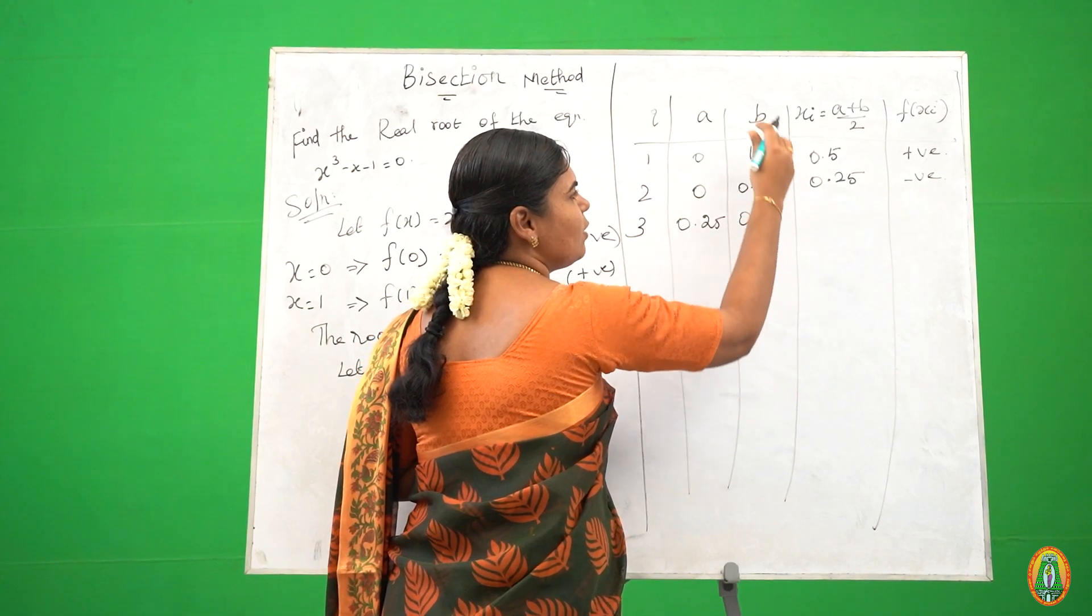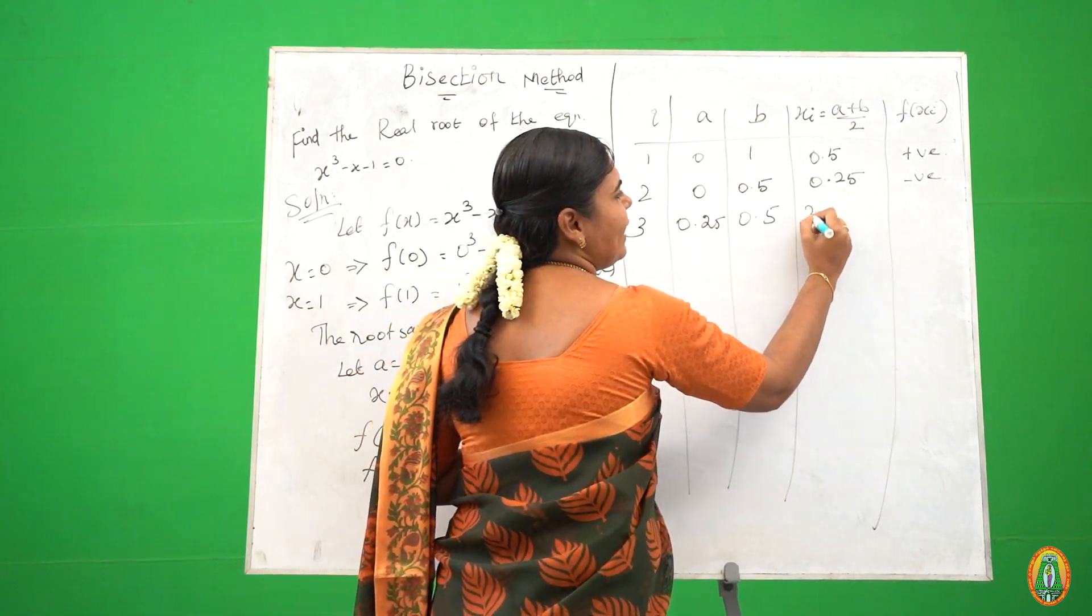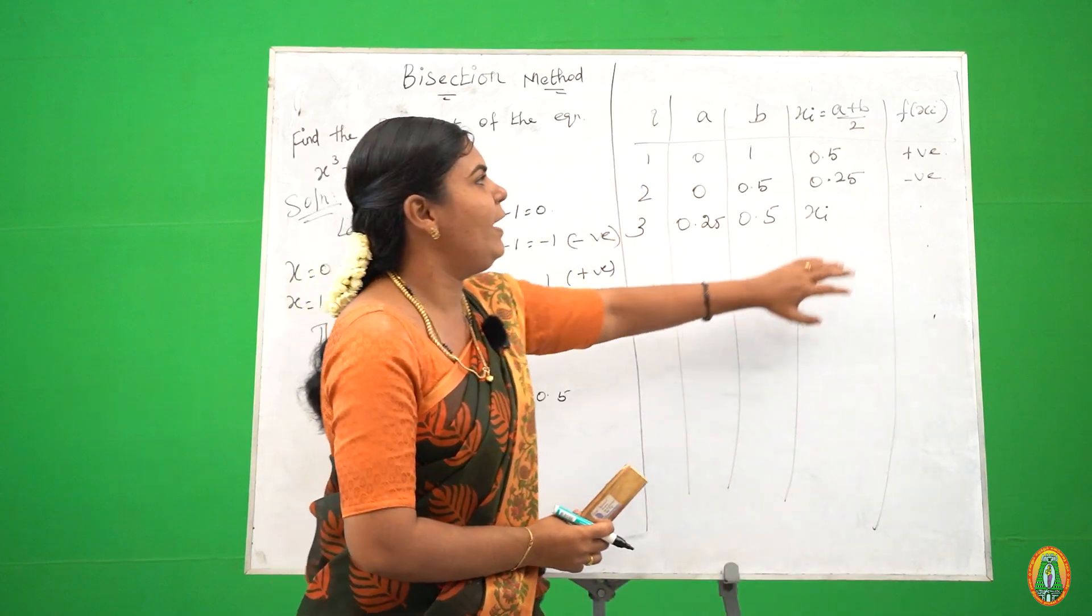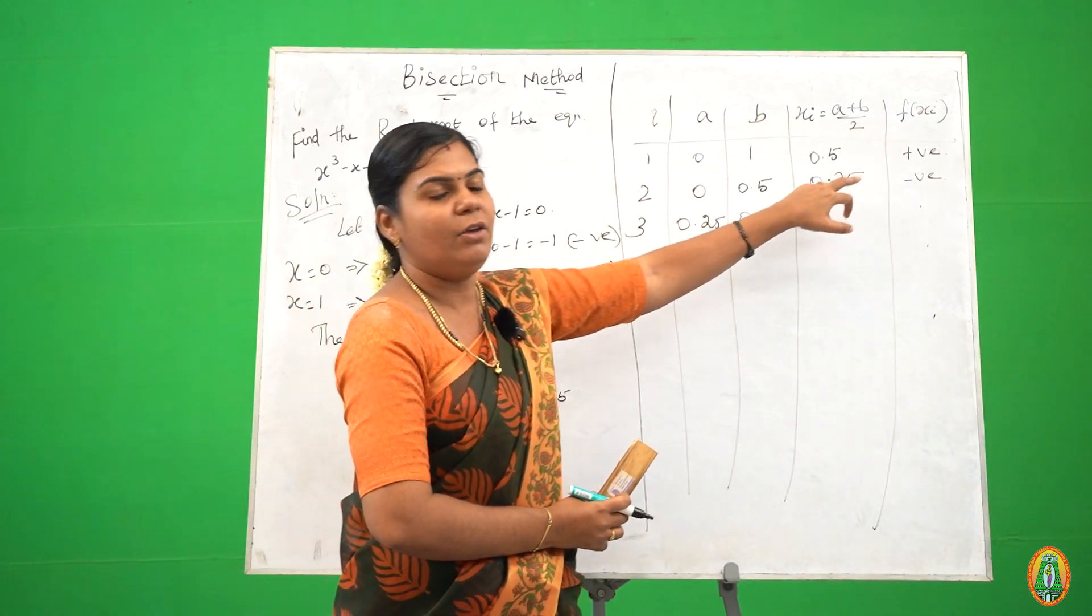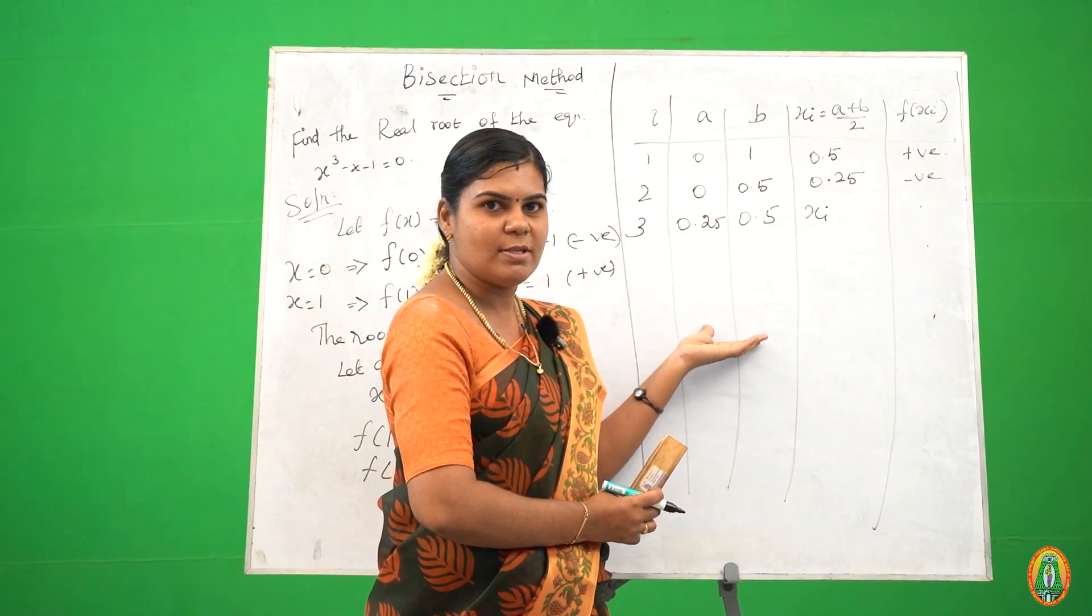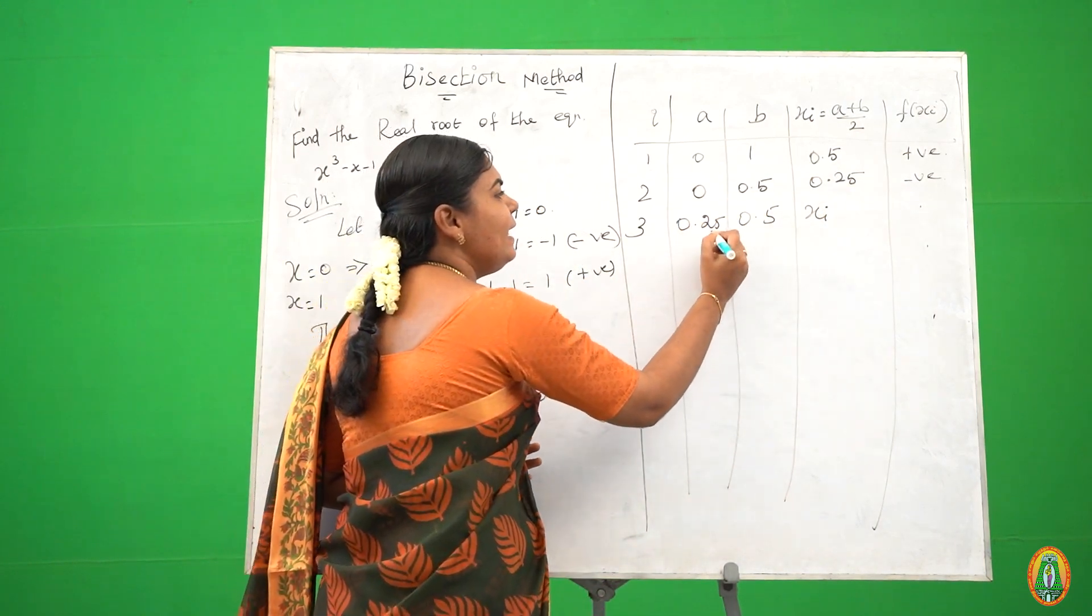So we continue this process. Suppose we got a positive value, we change b. If you got a negative value, we change a. You continue this process till the nearest root.